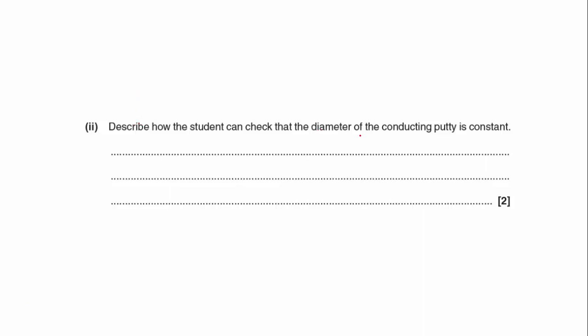Describe how the student can check that the diameter of the conducting putty is constant. What they would need to do is, you would need to say, using a micrometer or the vernier calipers.